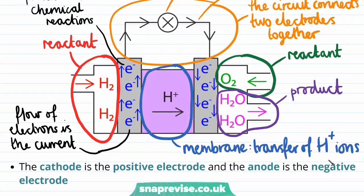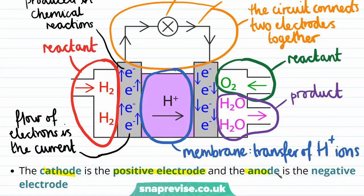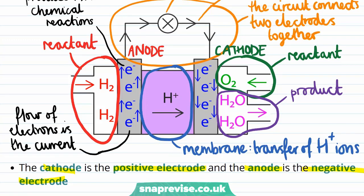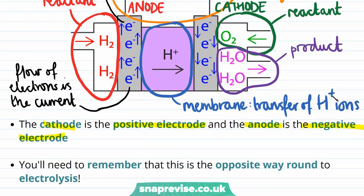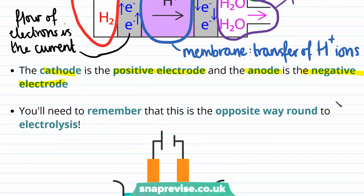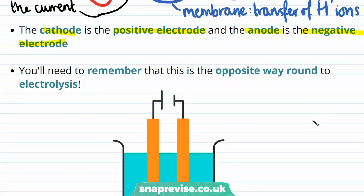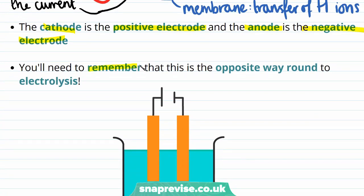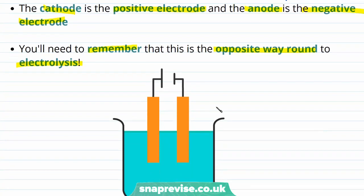In a fuel cell the cathode is the positive electrode and the anode is the negative electrode. The charge flows from the anode — the negatively charged electrode on the left-hand side where electrons are taken away from hydrogen — round to the cathode, the positively charged electrode on the right-hand side, where electrons are given to the oxygen reactant or the water product. We name the electrodes in a fuel cell the opposite way round to electrolysis, because in electrolysis we don't produce electricity — we instead provide it from an external source.